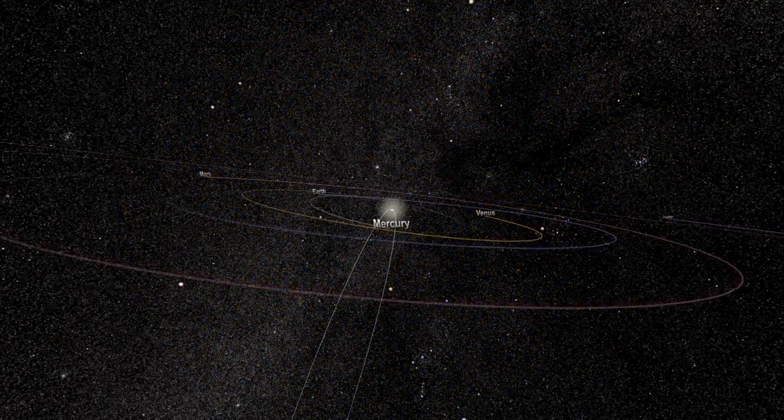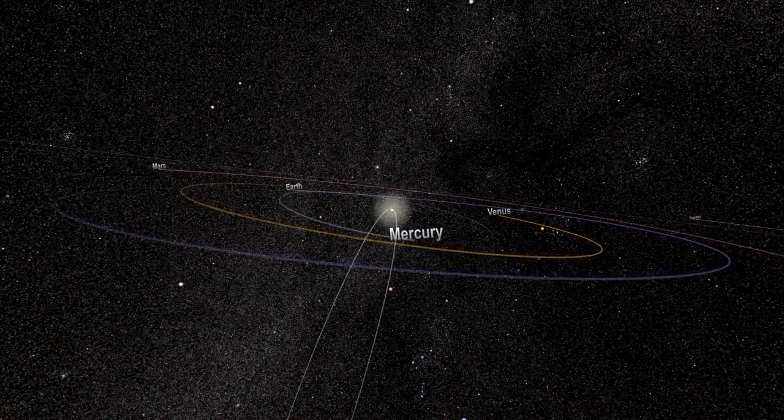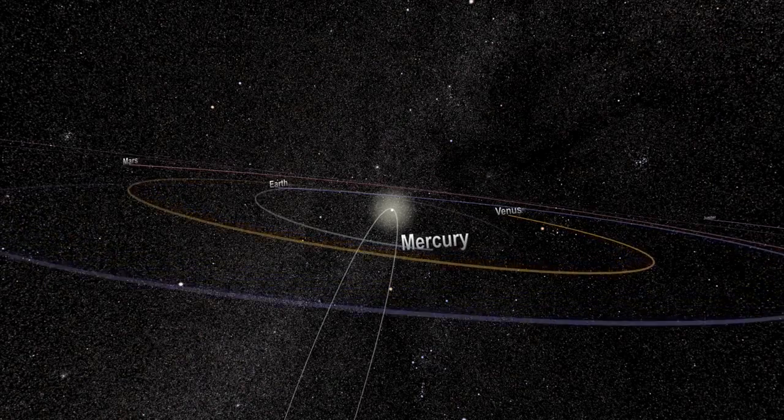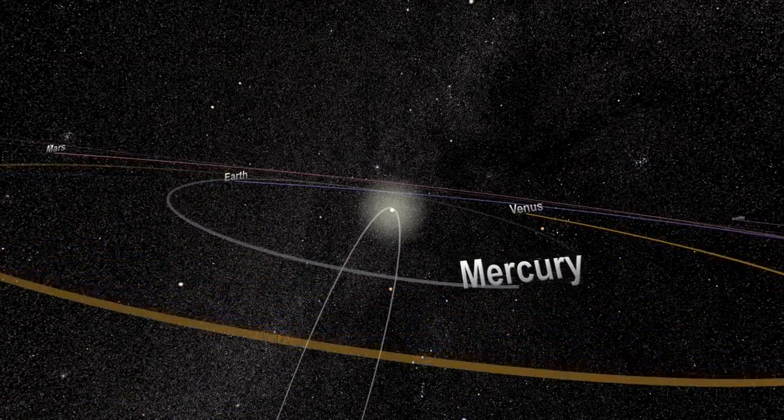Many sungrazing comets follow a similar orbit, called the Kreutz path, and collectively belong to a population known as the Kreutz group. In fact, close to 85% of the sungrazers seen by the SOHO satellite are on this orbital highway.